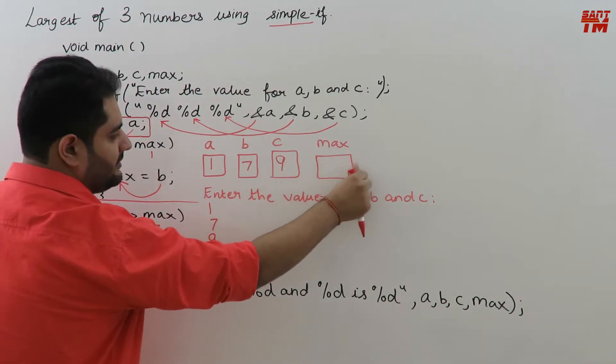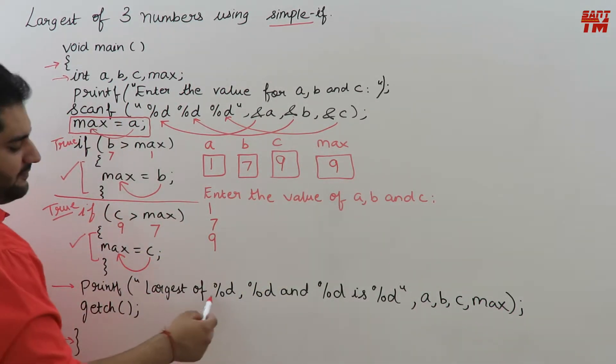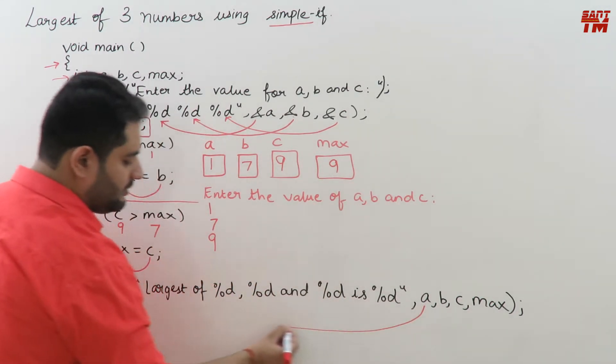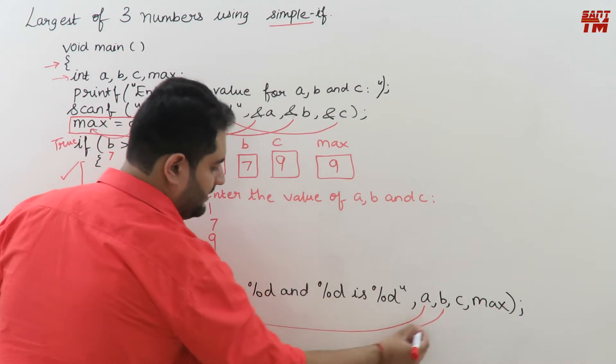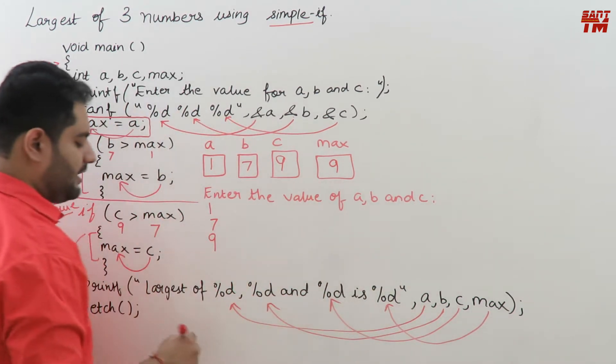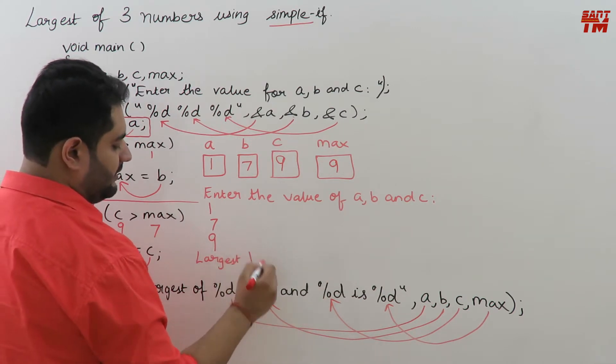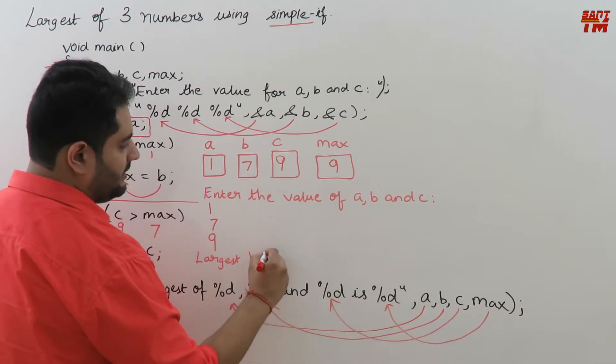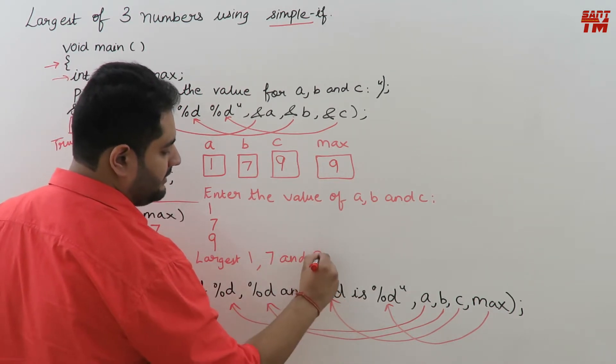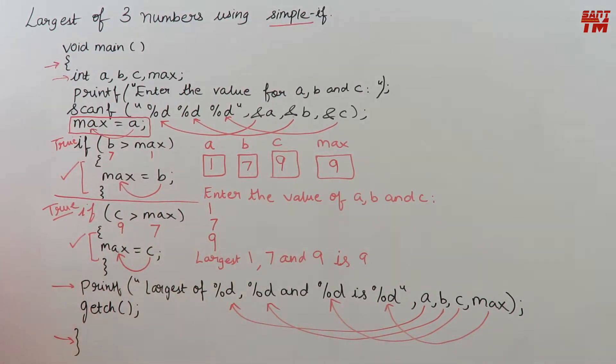So now the last statement printf largest of %d, %d and %d is %d. So what is this exactly? a will go to the first %d, b will go to the second and c will go here, max will go here. So the output will be largest of value of a is 1, %d will get value of b 7 and then and this %d will get 9 is this %d will get max that is 9. So largest of 1, 7 and 9 is 9.